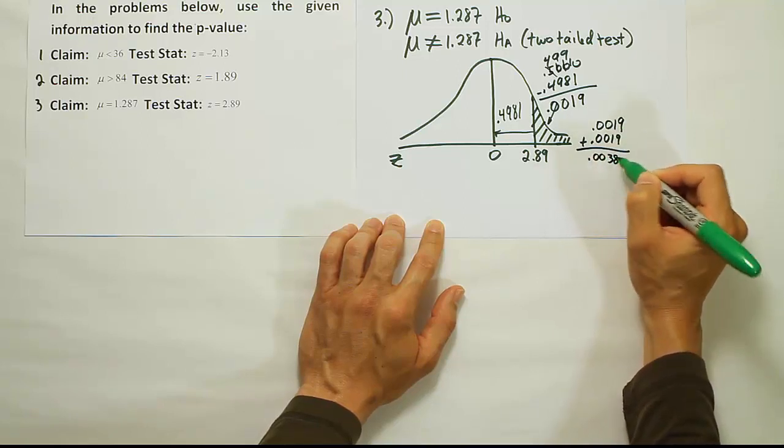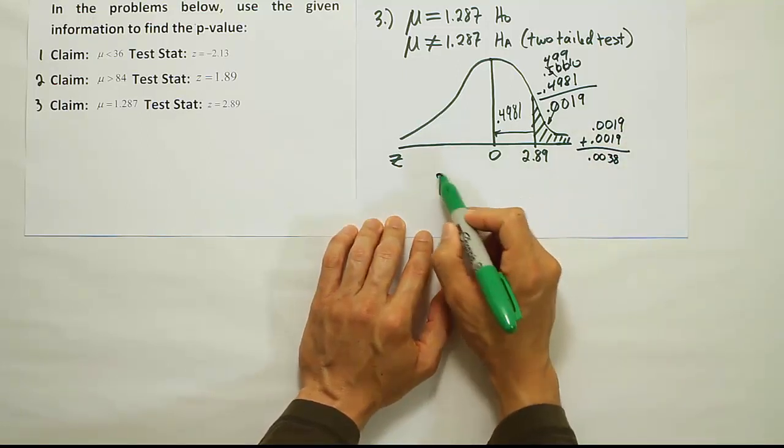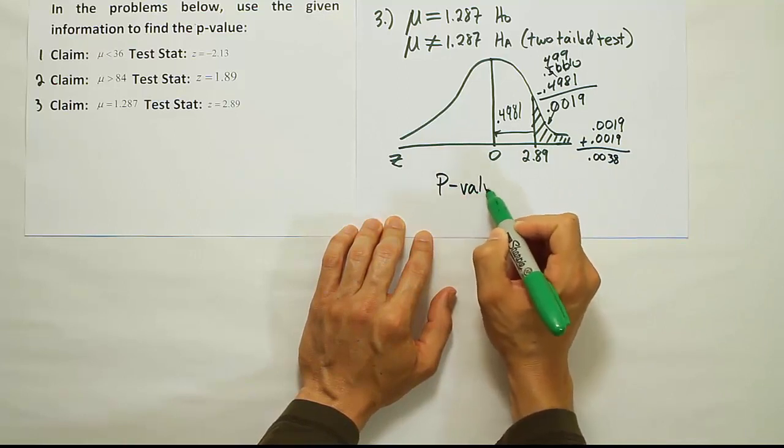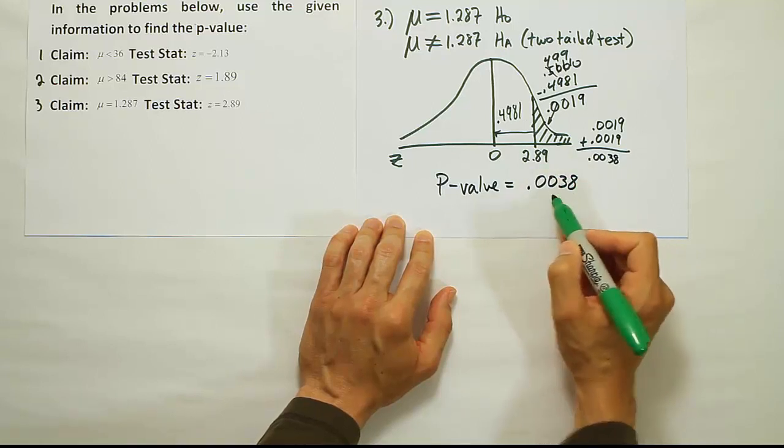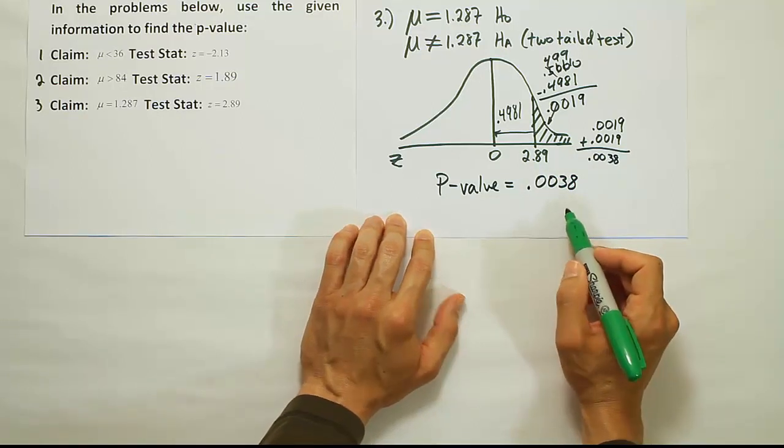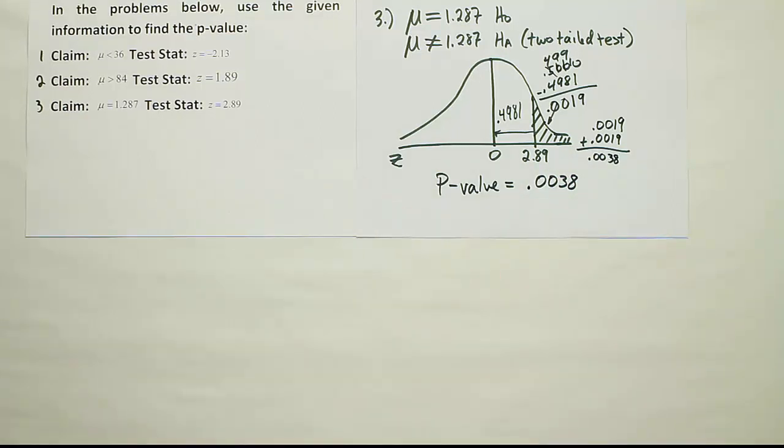Either way, you get the answer 0.0038. So our p-value is equal to 0.0038, so about 4 tenths of 1%. Okay, all right.